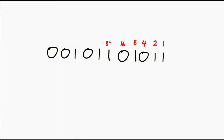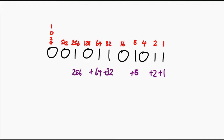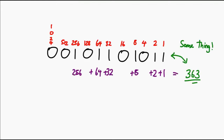Just to quickly recap: you can think of a binary string as a set of on and off switches for a whole bunch of different weights. If it's 1, then that particular weight has been switched on. To get the value, you look at all the switched-on weights and add them together.